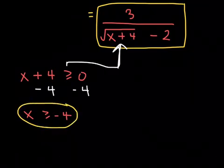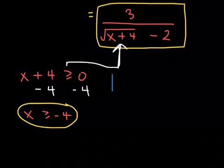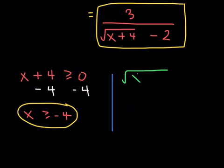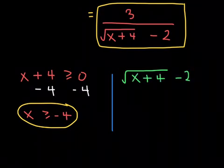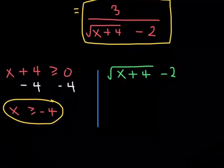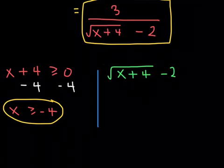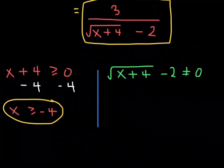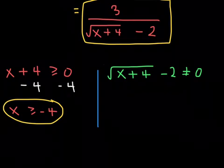In addition to that, there is something else we have to consider as well. We must also say that this entire denominator, the square root of x plus 4 minus 2, must not be equal to 0. Because if the denominator turns out to be 0, then the whole function's undefined. So we want to figure out what makes this denominator become 0.